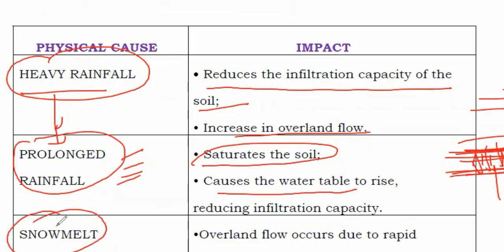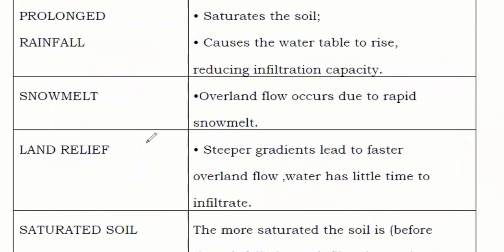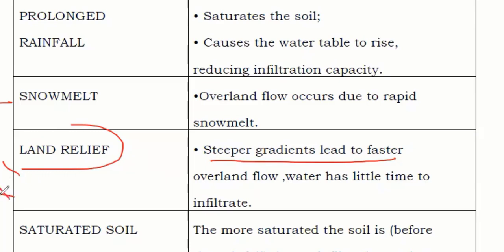Another cause is snowmelt. In areas with snowfall, when the snow melts in summer, a large amount of water enters rivers and can cause flooding. For example, in a hill area when snow melts, if the surface is flat the water can infiltrate downward. But on a slope, water flows very fast and does not have time to infiltrate, so more water rushes down and can cause a flood.